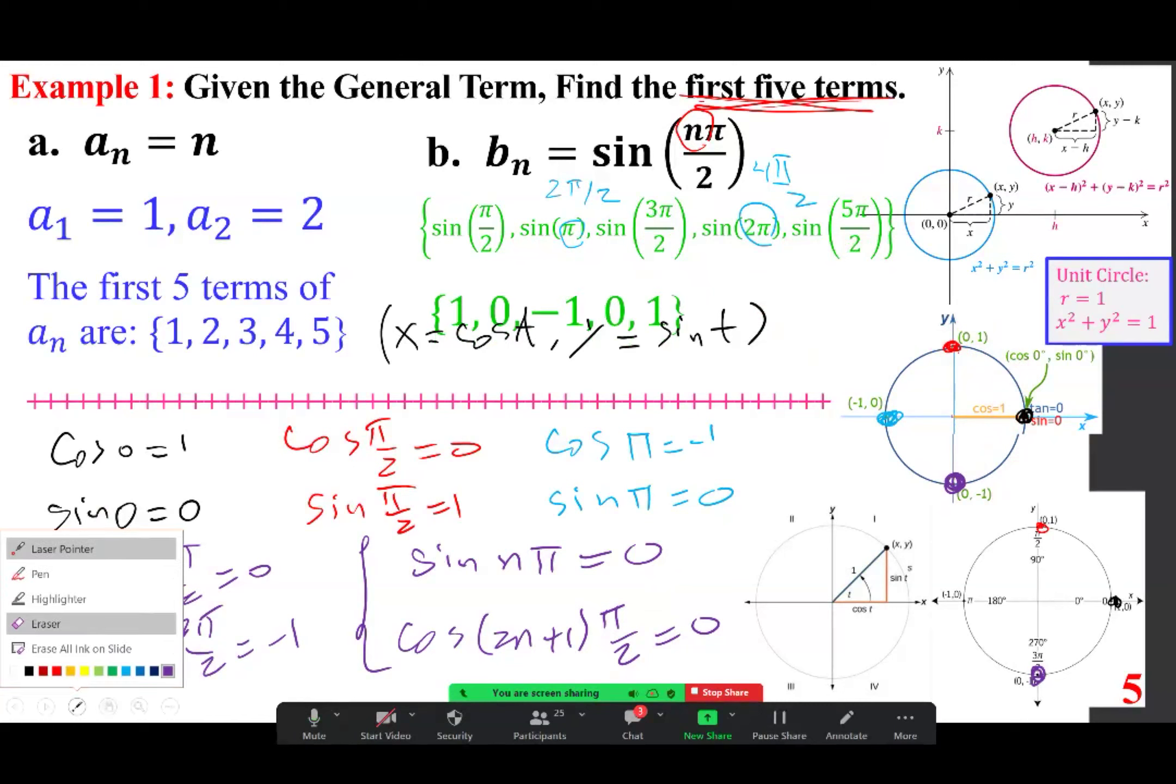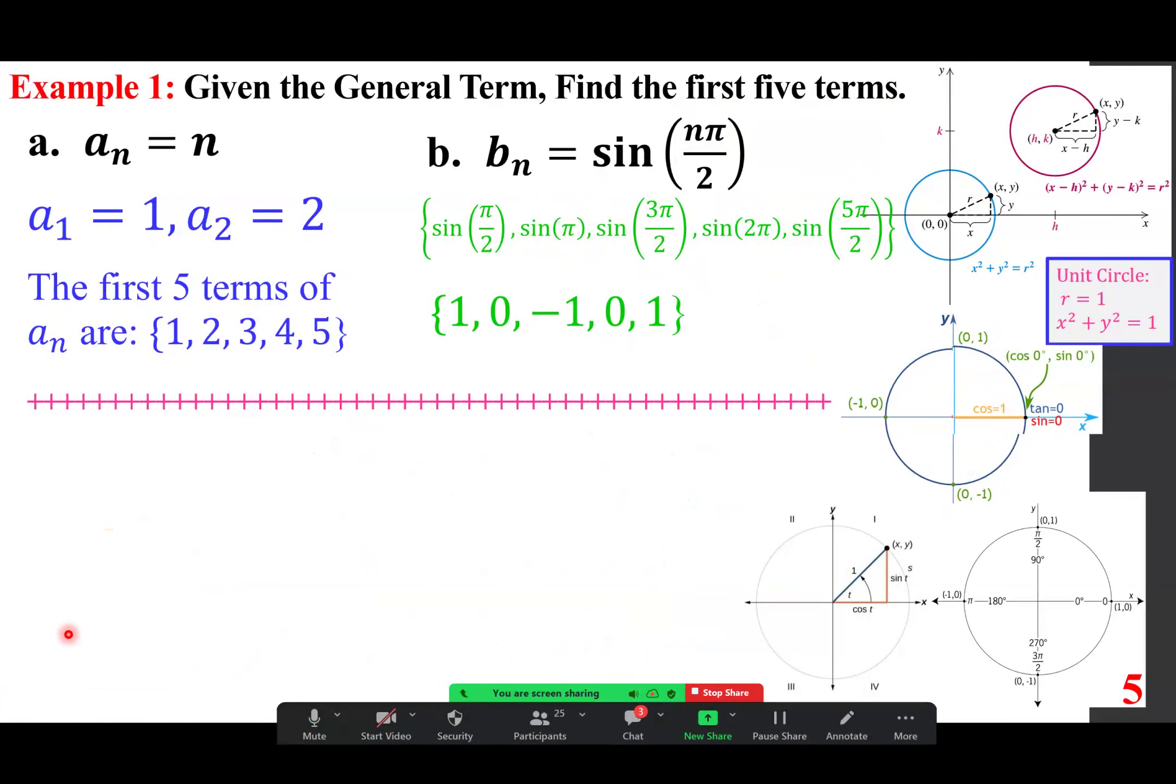So let me clean up. You can see that. C sub n is defined as n over 1 plus n. For example, if I choose n to be 1, everybody, n equals 1 results in 1 half. Can anybody tell me what happens if I choose n equals 2? C sub 2 is 2 over 1 plus 2. That means 2 thirds. So 1 half, 2 thirds. So if you continue, you get 3 fourths, 4 fifths, and 5 sixths.